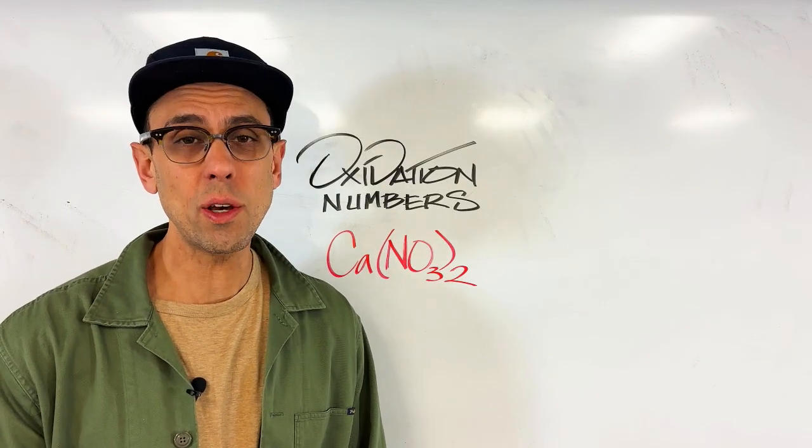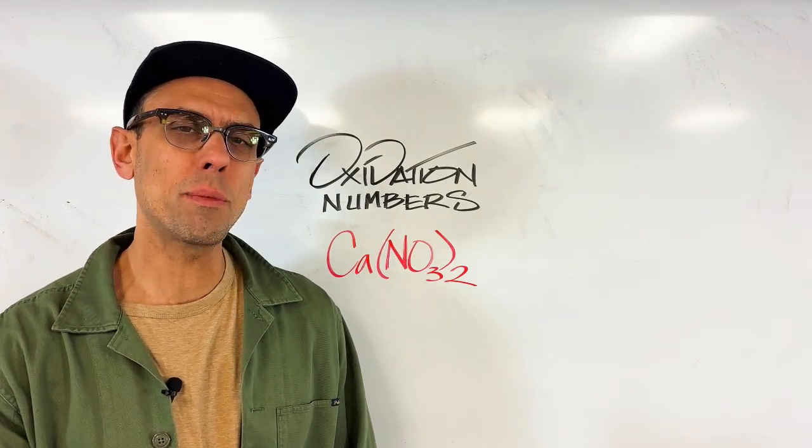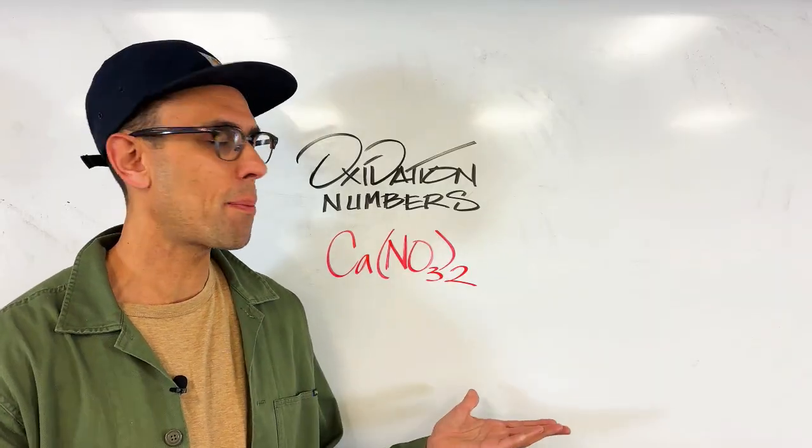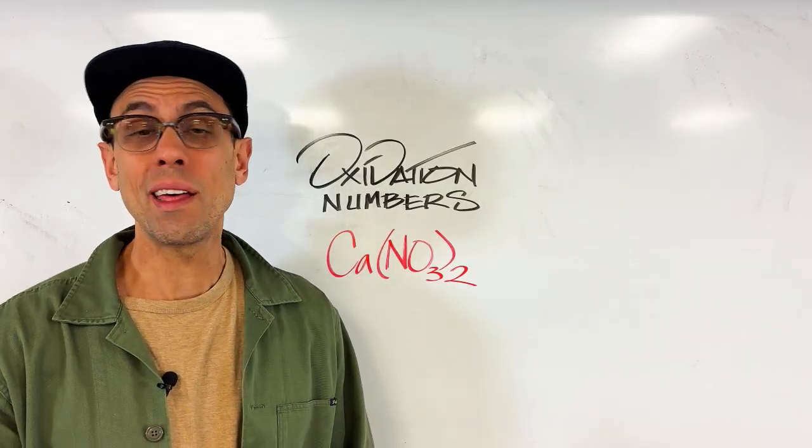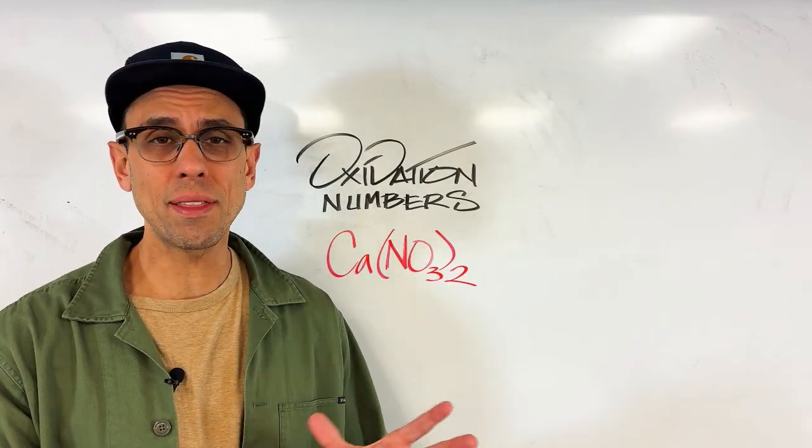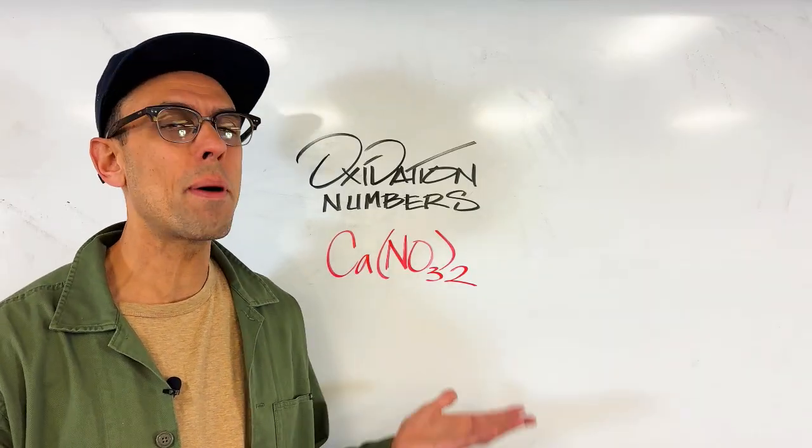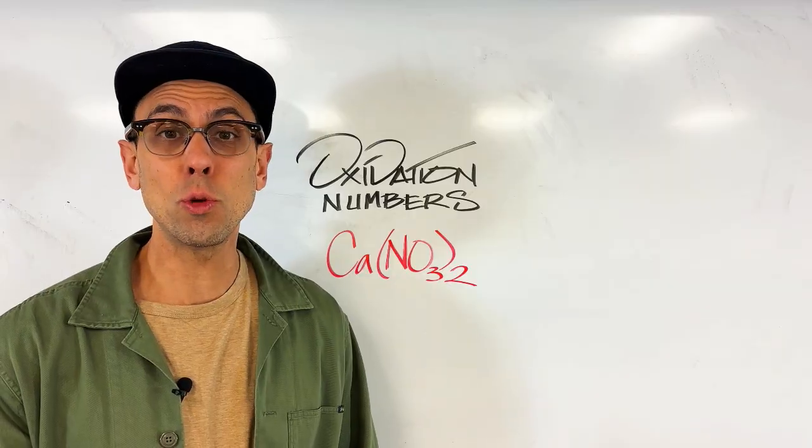Hey people, welcome to my latest video where we're going to be looking at oxidation numbers in a very specific way. I want to deal with ionic compounds like calcium nitrate that involve a polyatomic ion in parentheses and subscripts. I often find that when students are learning about oxidation numbers it's compounds like this that can be super tricky.